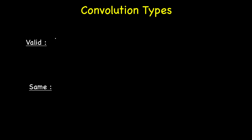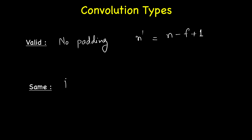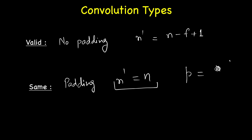Based on this, we now have two types of convolutions. The first is valid convolution, where we do not pad at all - no padding - so the new size n' = n - f + 1. The second is same convolution, where we pad so that n' = n, meaning the size is preserved. We saw that for same convolution we need to pad by (f - 1) / 2 pixels on each side.